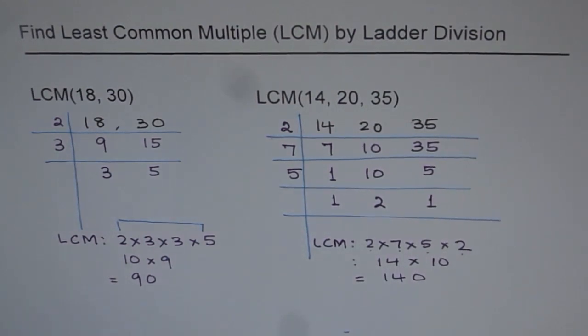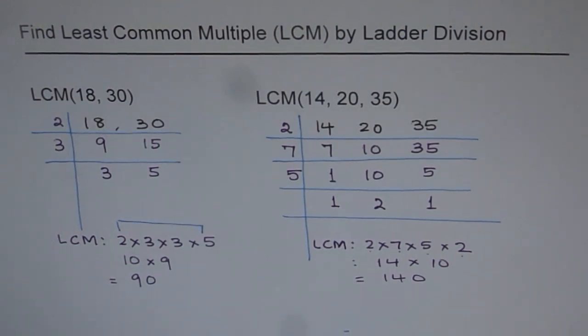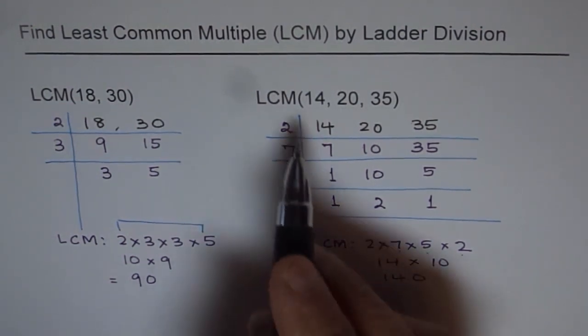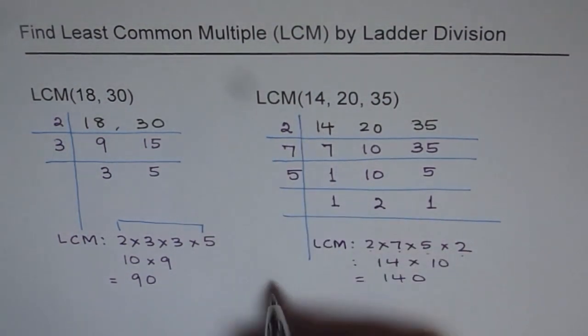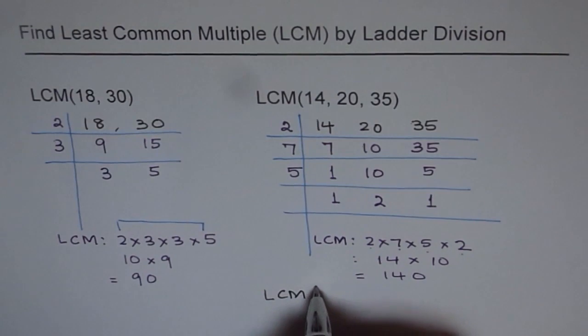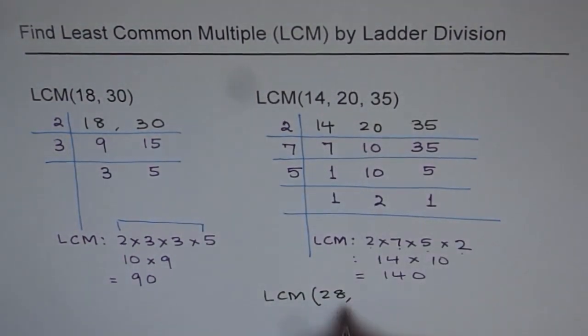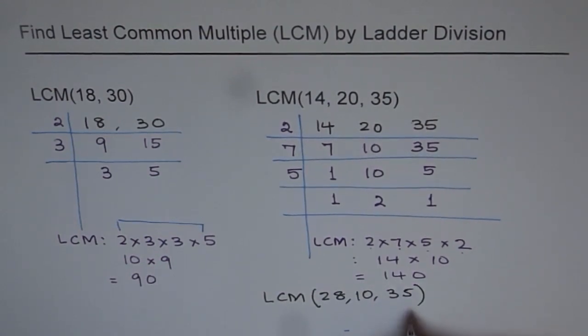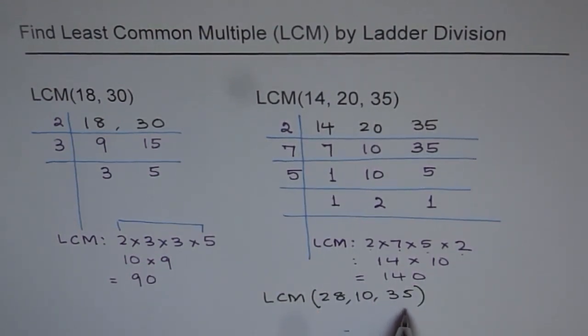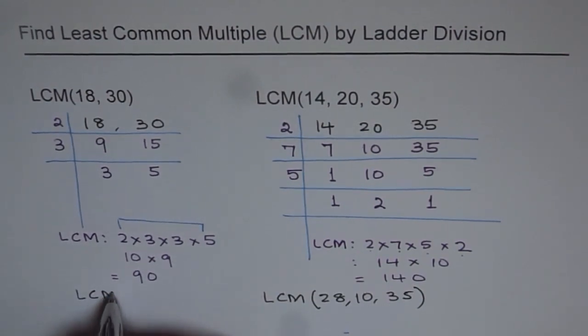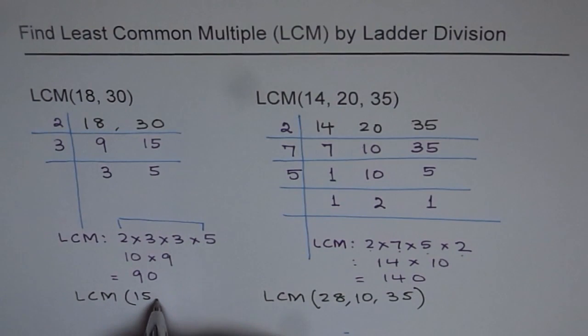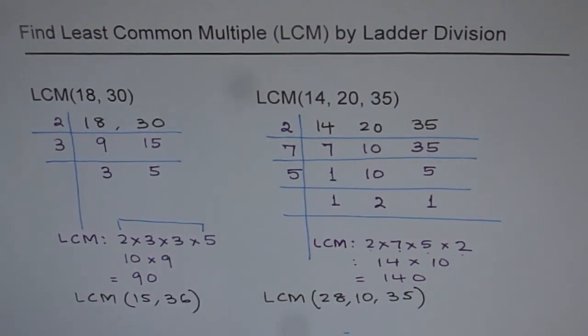So you see how efficient this method is to find common multiples. I would like you to find the least common multiples of some numbers. Let me change a few numbers from here. I am making 14 as 28, 10 and let's retain 35. Try to find LCM for this set of numbers. On this side, let me give you as your practice problem LCM for 15 and 36. This will help you to practice and understand how to find LCM by ladder division. Thank you.